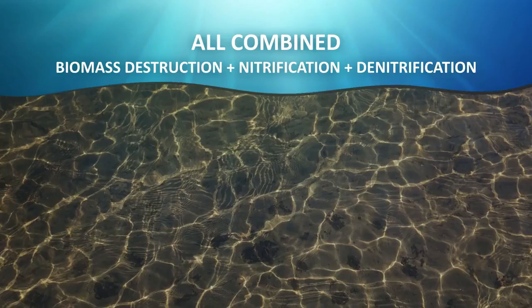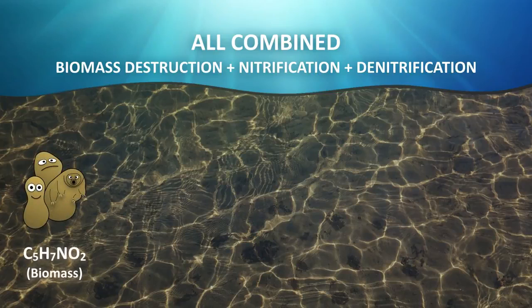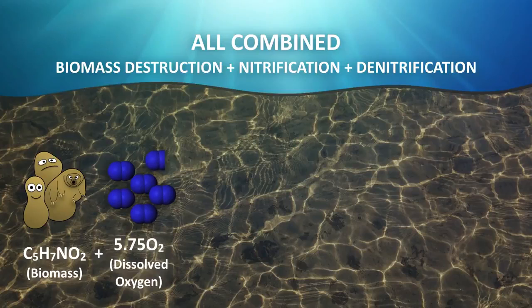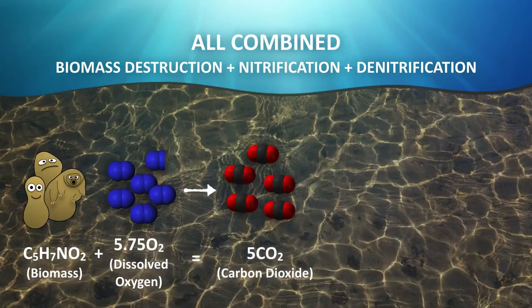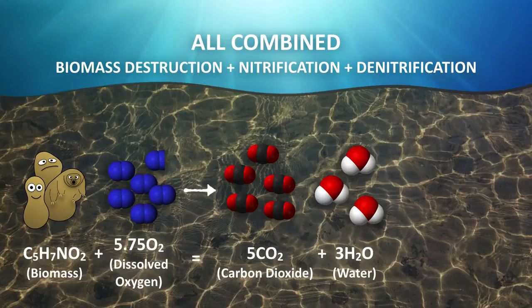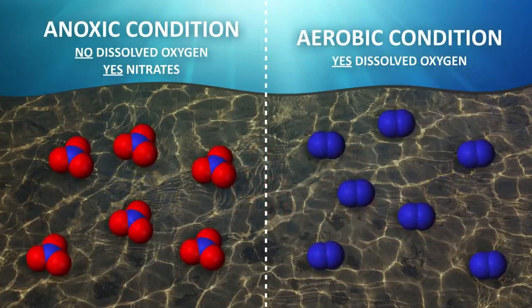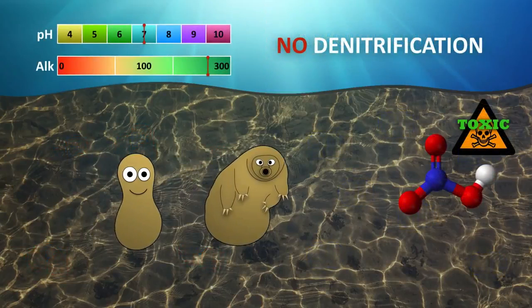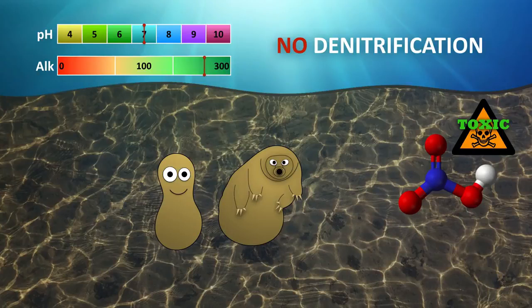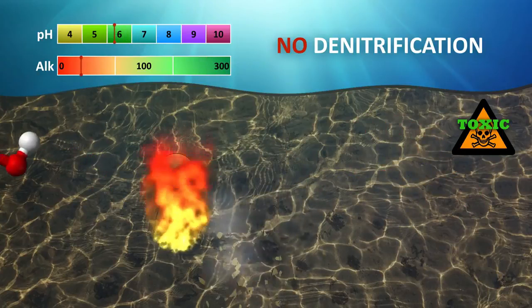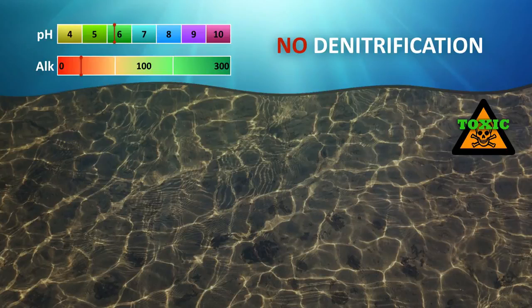Combining the biomass destruction and nitrification with the denitrification step results in the biomass oxidizing only 5.75 moles of oxygen and reducing it to 5 moles of carbon dioxide, 3 moles of water, and half a mole of nitrogen gas. It is very critical in the denitrification process to create an environment without oxygen because microorganisms will prefer to oxidize oxygen instead of nitrates. Without this step, nitric acid will continue to accumulate and consequently deplete the alkalinity, making the environment inhospitable for the biomass.